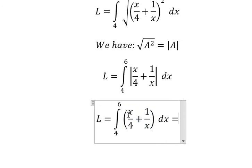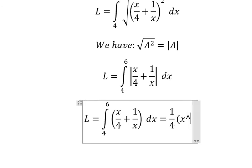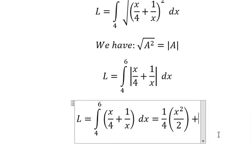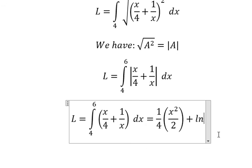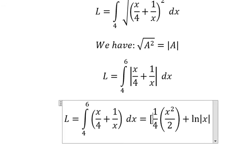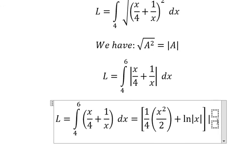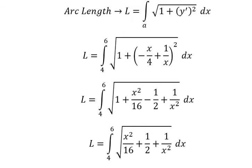The integration of x over 4 plus 1 over x gives us x squared over 2 divided by 4 plus the natural log of the absolute value of x. And we put the bounds from number 4 to number 6.